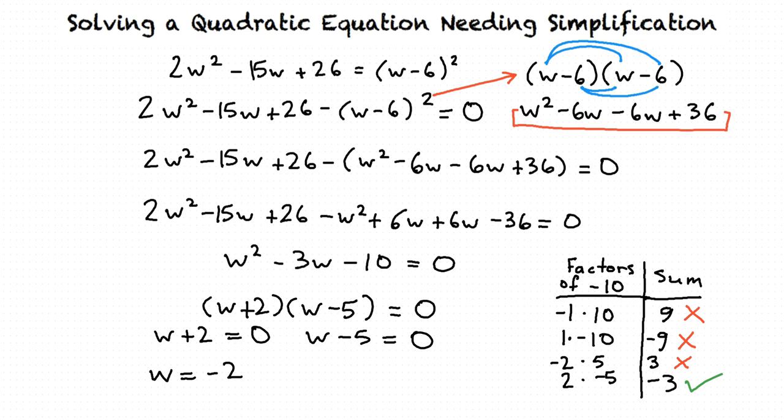And if I have w minus 5 equals 0, then w is equal to 5. So w equals negative 2 and 5 are the solutions to this quadratic equation.